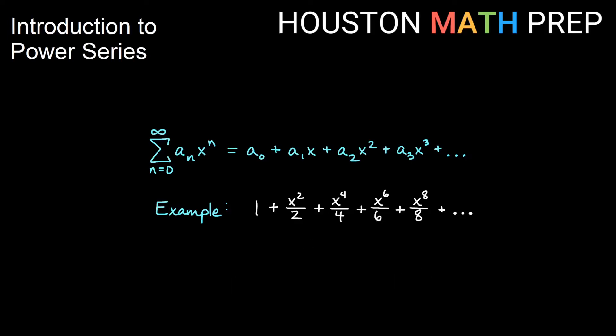If we look at another example, this is a bit different. So we notice right away we have some fraction coefficients for our terms. We have 1 plus x squared over 2 plus x to the 4 over 4 plus x to the 6 over 6, etc. So you'll notice our powers are actually going up by 2 this time.